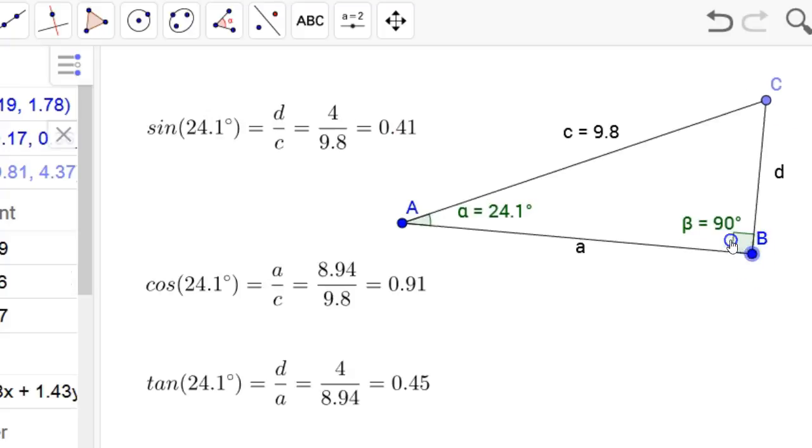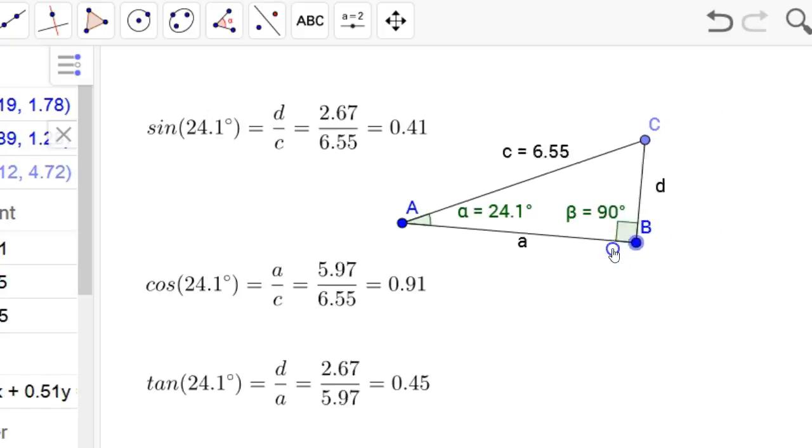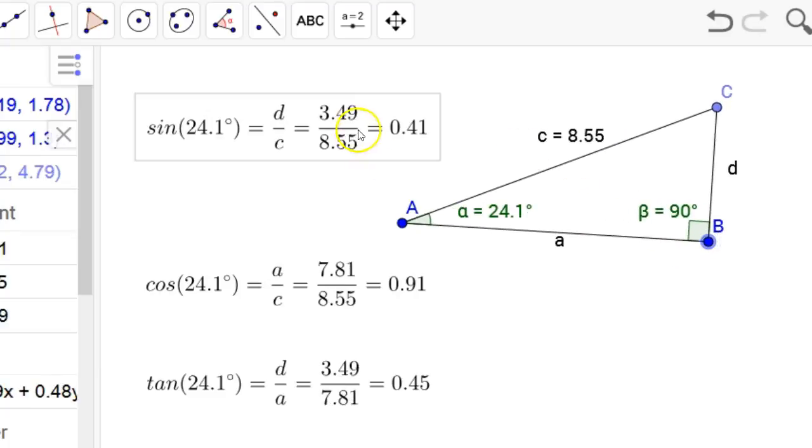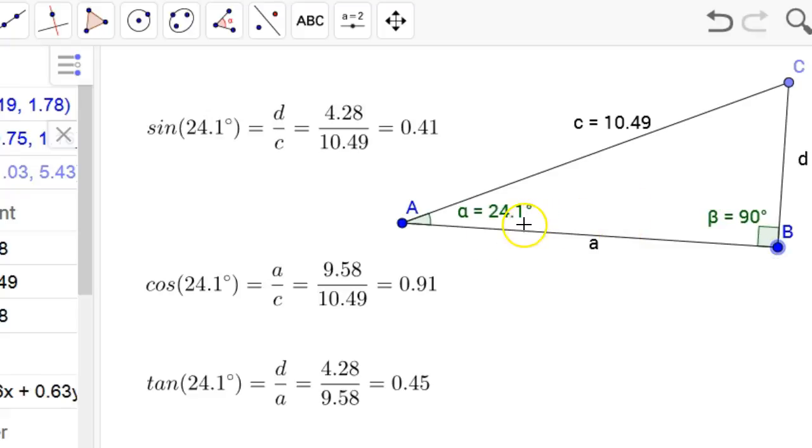So no matter how I shrink or expand this, those ratios remain constant. So sine of 24.1 is always 0.41. Cosine of 24.1 is always 0.91 in a right triangle. No matter how big or small I make it. If that angle is 24.1 in a right triangle, these ratios remain constant. Sine, cosine, tangent.